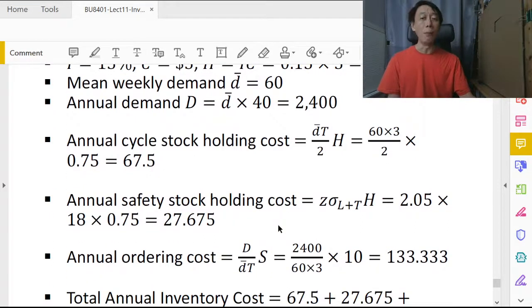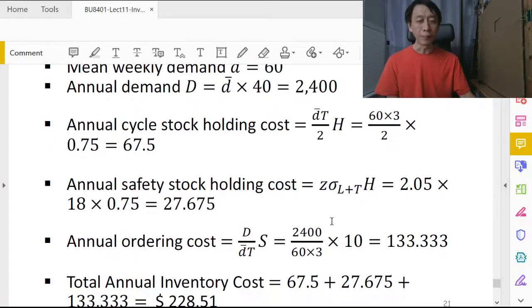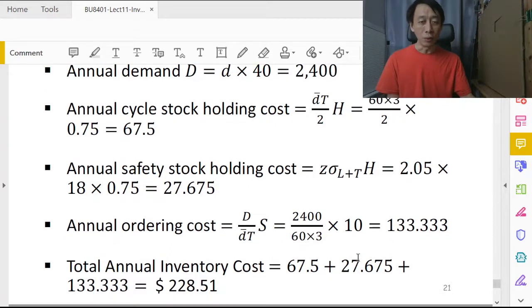So we add them all up to get the annual inventory cost. And this we claim is pretty good cost, probably, again, everything is probabilistic, probably the lowest we can expect for the company if we run a periodic review in this manner.